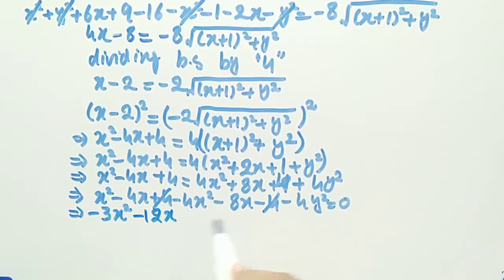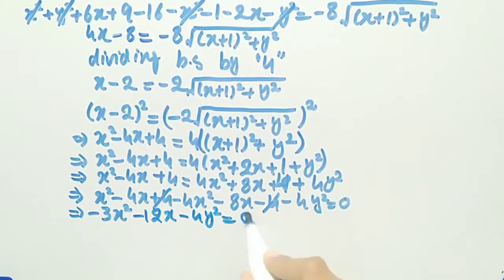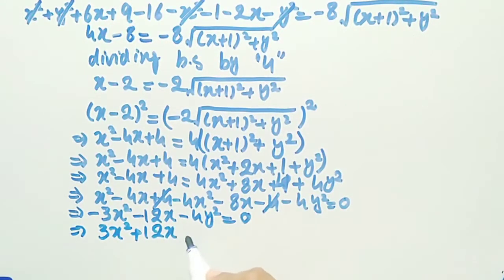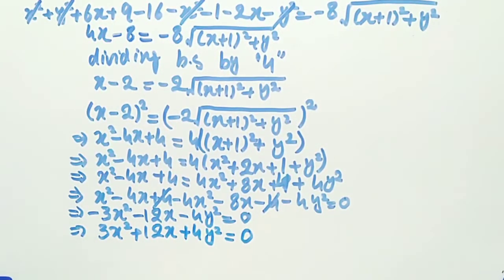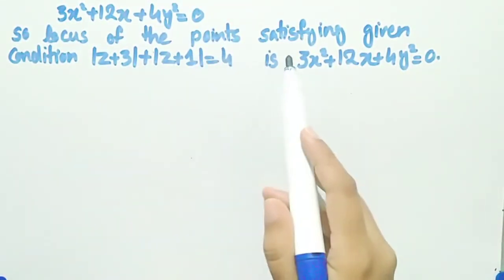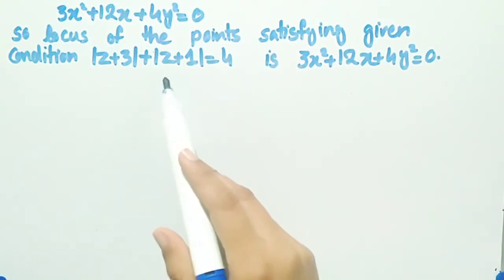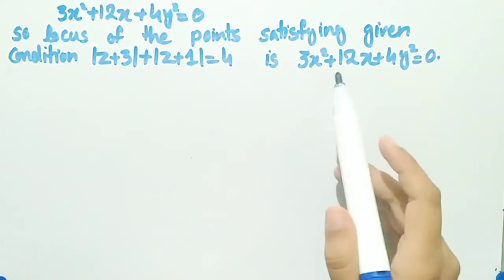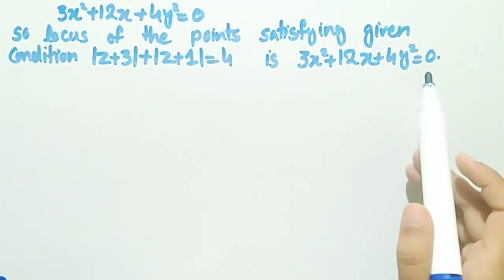We have minus 3x square minus 12x minus 4y square equal to 0. Multiplying by minus 1, we get 3x square plus 12x plus 4y square equal to 0. So the locus of the points satisfying the given condition, mod of z plus 3 plus mod of z plus 1 equal to 4, is 3x square plus 12x plus 4y square equal to 0.